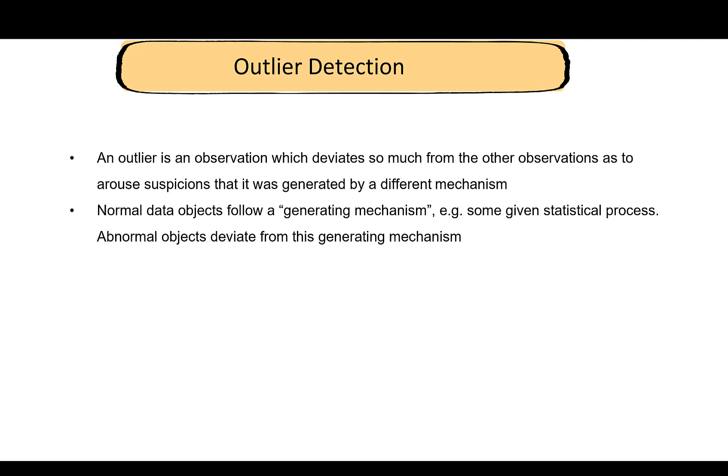Normal data sets or the usual data objects follow some kind of a generating mechanism. For example, it's possible that most of the data is generated by a normal distribution or exponential distribution. However, the abnormal objects in the data set or the outliers are generated from some other kind of distribution, which is why they sit away from the rest of the data points.